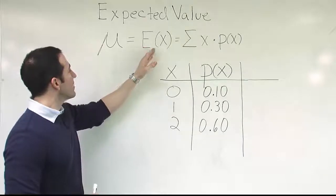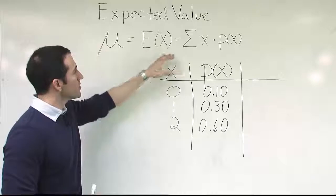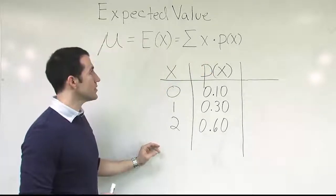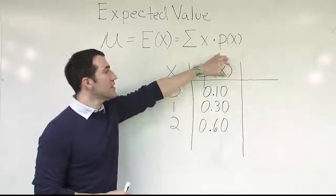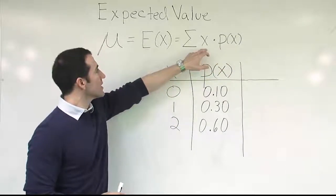Generically, we'd say the expected value of x is the mean for x. For this particular type of probability distribution, which is a discrete probability distribution, we're going to use this formula here, which is the sum of x times p of x.